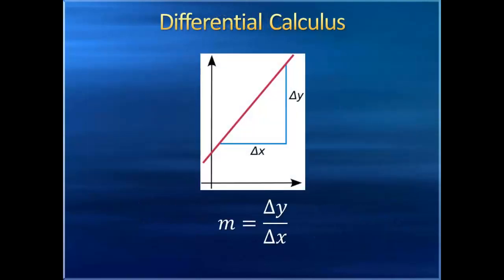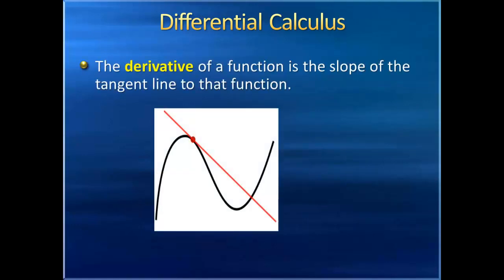You're no doubt already familiar with the slope of a line. Given any two points on the line, the slope is the difference in the y coordinates divided by the difference in the x coordinates, which we might write as delta y over delta x. Differential calculus generalizes this concept and lets you find, in essence, the slope of a curve, called the derivative, instead written as dy over dx. It's found by making the two points we use to measure the slope incredibly close, infinitely close to each other, giving us the slope of the tangent line to that function, which we can also think of as the rate of change.